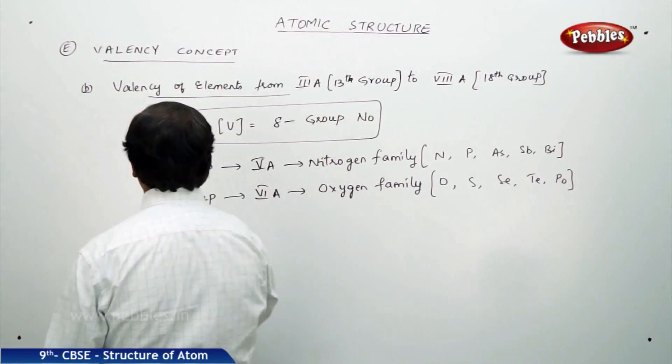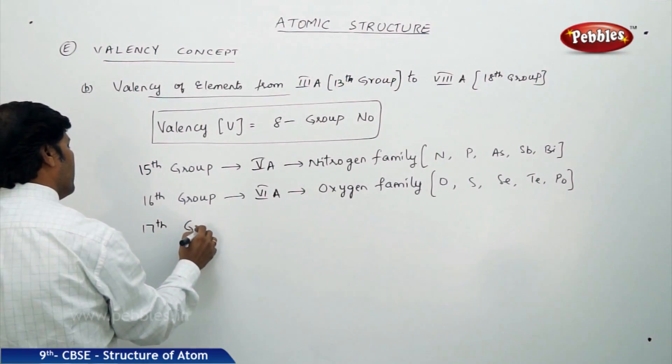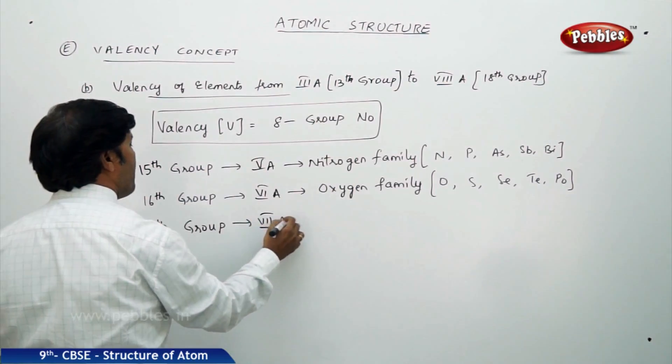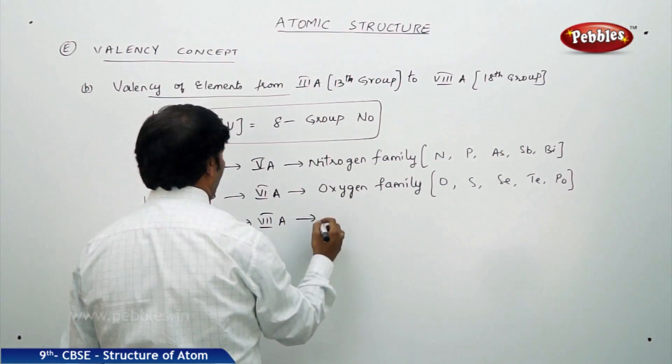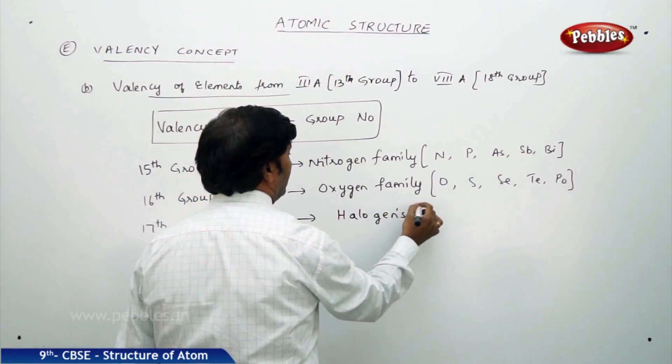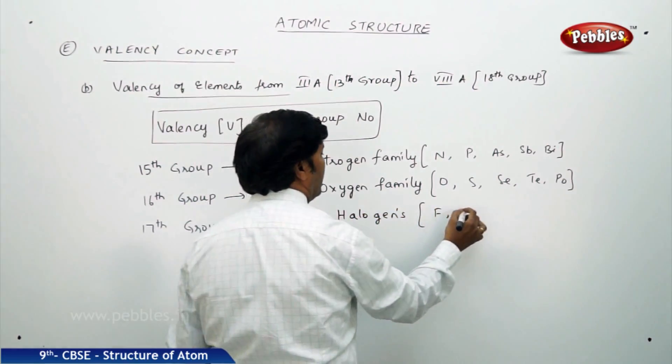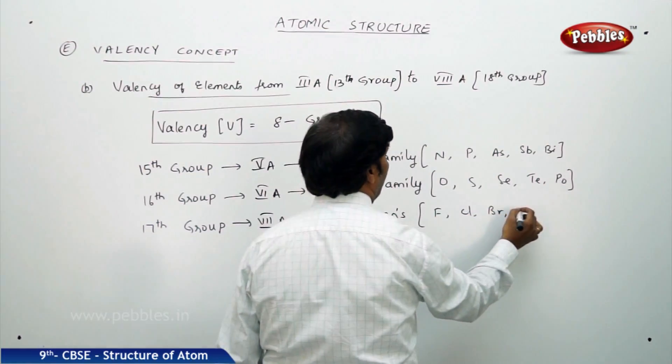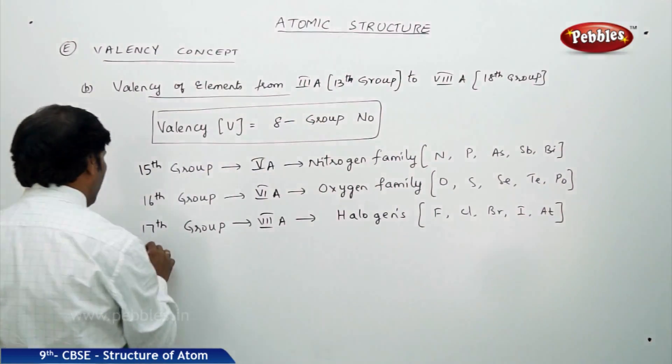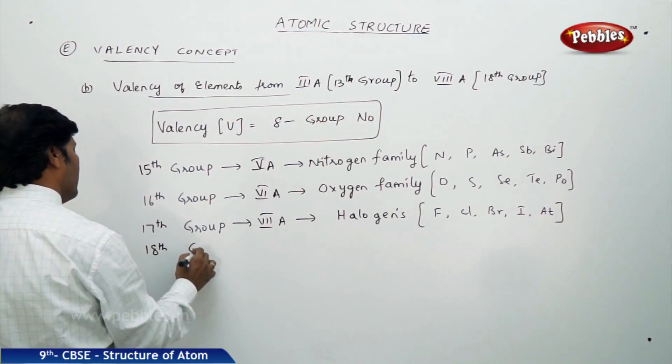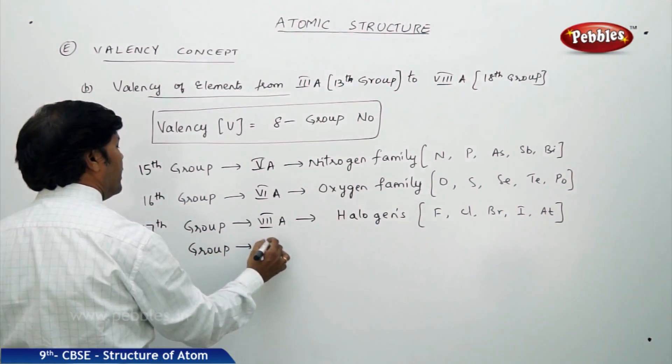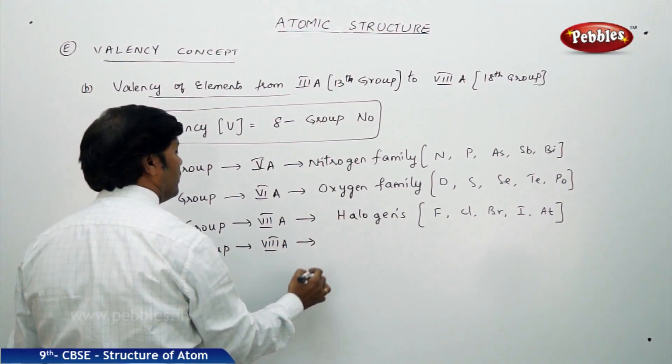Similarly go for 17th group, 7A that is halogens: fluorine, chlorine, bromine, iodine and astatine. Go for 18th group, 8A group, noble gases.